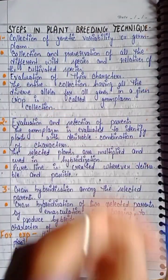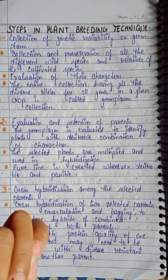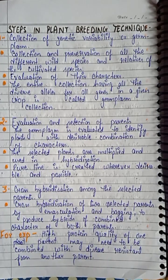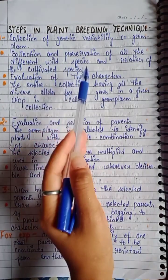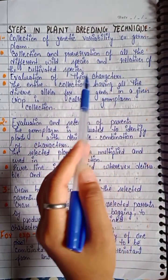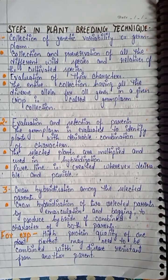Steps in plant breeding techniques. The first step is collection of genetic variability and germplasm. We collect all the genetic varieties of a crop. This involves collection and preservation of all the different wild species and relatives of the cultivated species — for example, if we grow wheat, we collect and preserve its wild relatives. We evaluate their characters to know more about them. The entire collection having all the diverse alleles for all genes in a given crop is called germplasm collection.